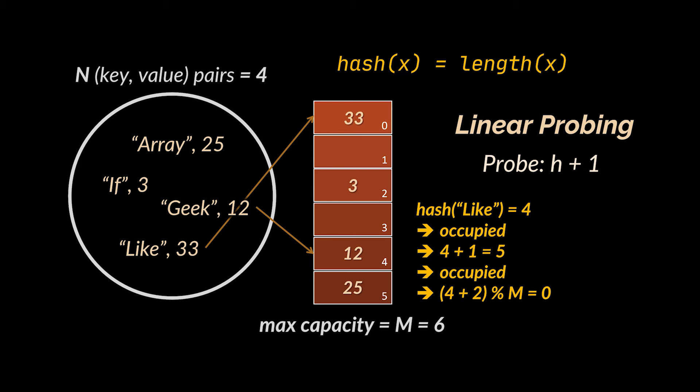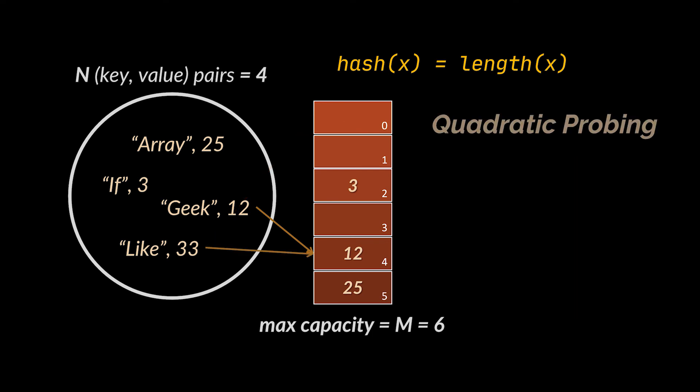The next sequence is the quadratic probing. In this sequence the interval between probes increases quadratically, and in this case we take the original hash index found and add successive values of an arbitrary quadratic polynomial until an open slot is found.